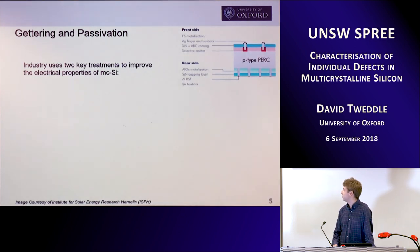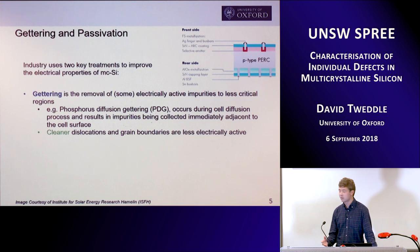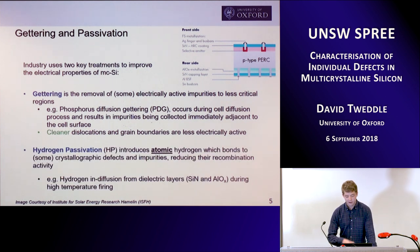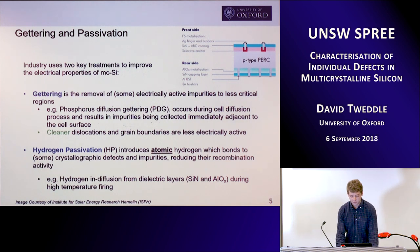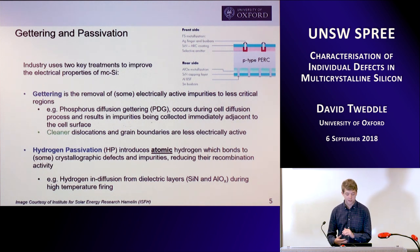Luckily, industry uses two key techniques to improve the electrical properties. As you all know, gettering occurs during the formation of your emitter, where you get a heating process and impurities dissolve into the bulk and segregate to a less critical region of your cell, in effect cleaning up your solar cell. And then hydrogen passivation, which is the introduction of atomic hydrogen during the firing of your metallisation. Hydrogen is released atomically from your dielectric layers and bonds to some of your crystallographic defects, reducing their recombination activity.